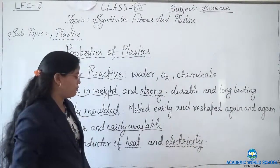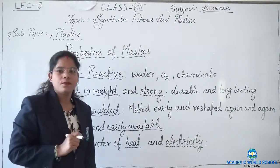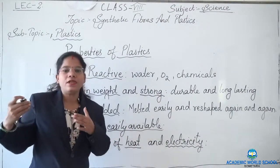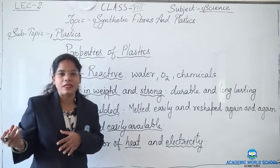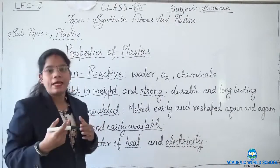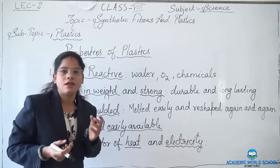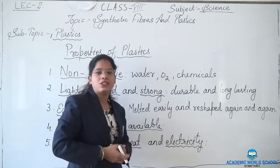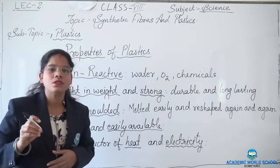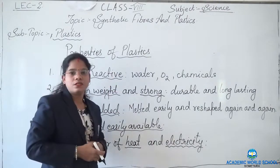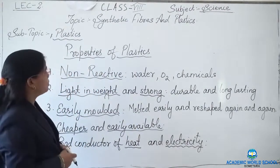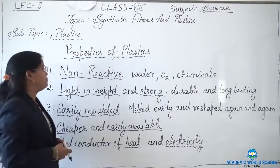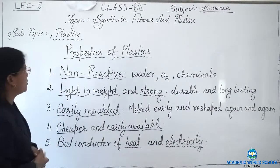Plastics are also bad conductors of electricity. Due to that, switches, plugs, and even electric wires are covered with different colors of plastic materials — sometimes black, sometimes red, sometimes yellow — but all those are plastics. Because we do not allow electricity to pass through them, it becomes easy for us to handle those wires which are covered by plastics. These are some unique properties of plastics due to which they are widely used in almost every field.